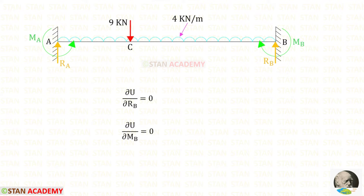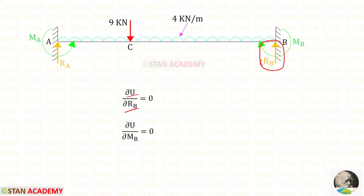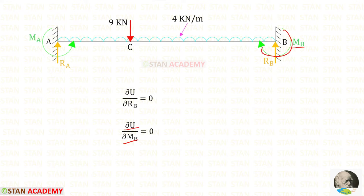At point B there is a fixed support, so there will be no slope and no deflection. Now let us use Castigliano's second theorem. When we partially differentiate the strain energy U with respect to Rb, we get the deflection at point B, which is zero. Similarly, when we partially differentiate U with respect to Mb, we get the slope at point B, which is also zero.